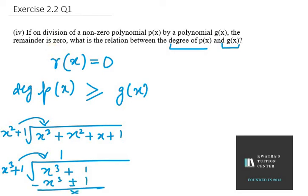So if the degree is the same, or if the degree is greater than G(x), it is possible that we get remainder as 0.